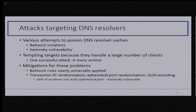When I think about record injection attacks, I typically think of the target as a shared recursive resolver, like those run by an ISP, or more recently, public resolvers like Google or OpenDNS. Things like bailiwick violations or the Kaminsky vulnerability can be used in an attempt to insert fraudulent records into the resolver's cache. These shared resolvers are a tempting target precisely because they are shared, so one successful attack has many thousands of victims.